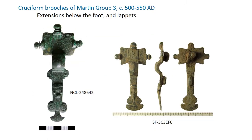Group three are maybe a bit wider and flatter again, but it's often very difficult to tell the difference between head plates of group two and group three. Both have half round knobs, but group threes generally have them made in one piece with the head plate. The difference is clear if you have either lappets or extensions below the nostrils, or both — lappets can have Style 1 relief ornament. Group three dates from around 500 to 550 AD, starting a little later than group twos.